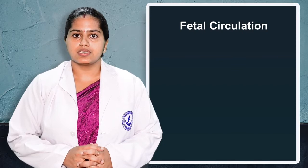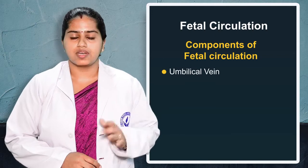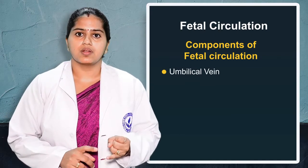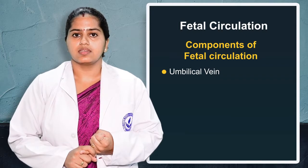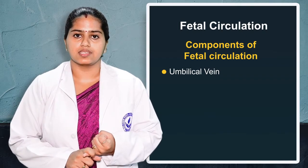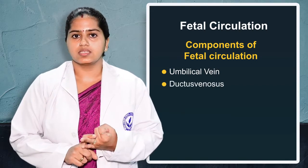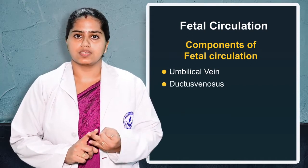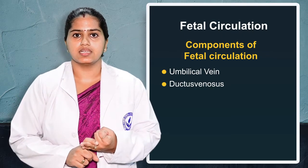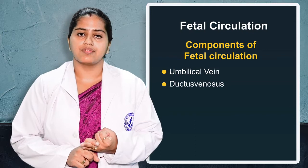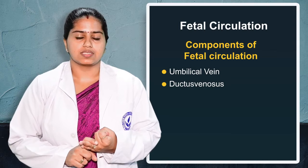Before going to fetal circulation, we will see what are the components that come under fetal circulation. There are five components. First is the umbilical vein, which starts from the placenta and reaches to the fetus — it carries oxygenated blood. Second is the ductus venosus, which is a connection between the umbilical vein and the inferior vena cava, and bifurcated to the portal vein.